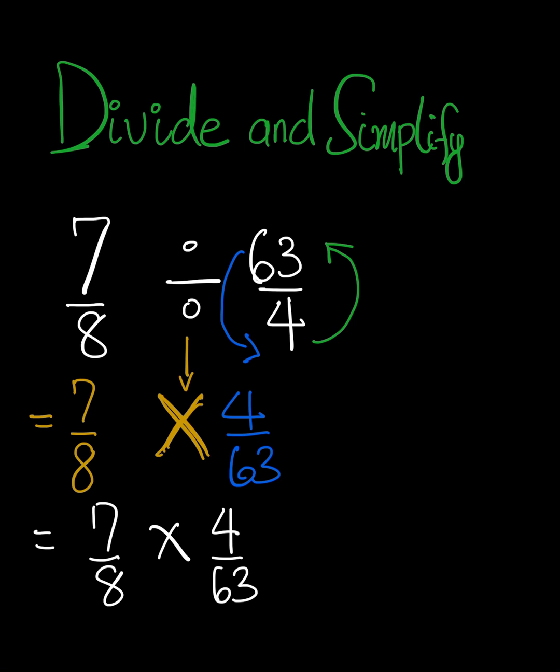If we take a look at this 7, it can go into itself 1, and we need to multiply 9 by 7 to get 63. So 7 was a common factor. It went in here 1, it went in here 9.